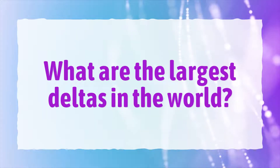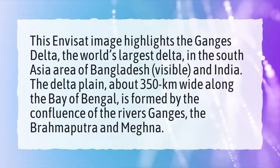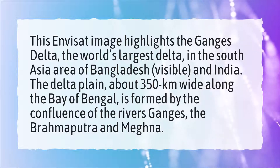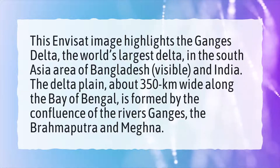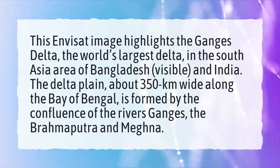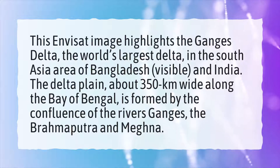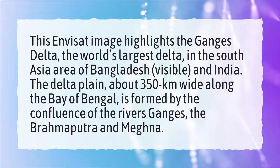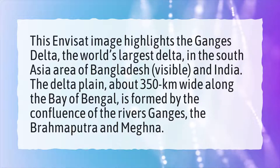What are the largest deltas in the world? This image highlights the Ganges delta, the world's largest delta, in the South Asia area of Bangladesh and India. The delta plain, about 350 km wide along the Bay of Bengal, is formed by the confluence of the rivers Ganges, the Brahmaputra, and Meghna.